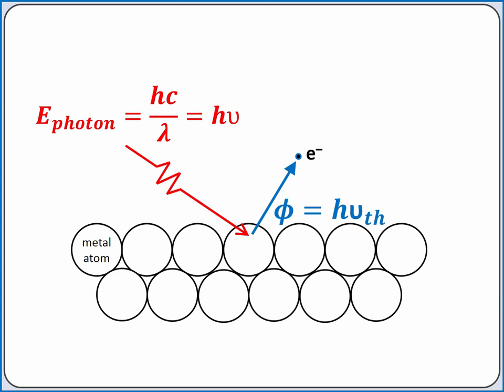To calculate the kinetic energy, we take the energy of the photon absorbed by the electron, subtract the binding energy of the electron, which was the energy keeping the electron in the metal.